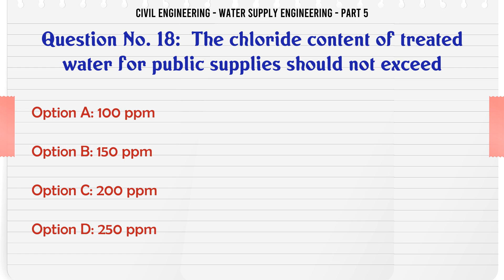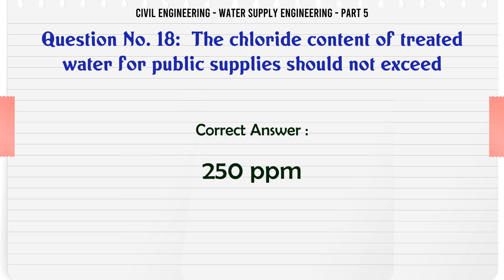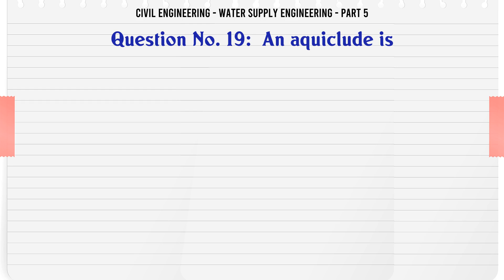The chloride content of treated water for public supplies should not exceed: A. 100 ppm, B. 150 ppm, C. 200 ppm, D. 250 ppm. The correct answer is 250 ppm.